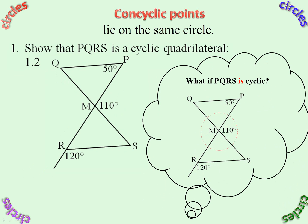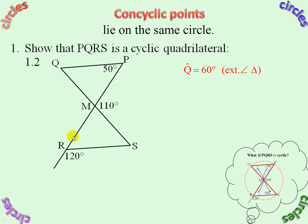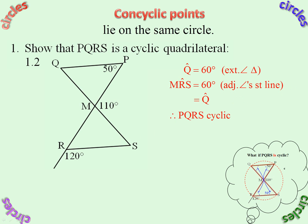Now prove PQRS is a cyclic quadrilateral. Here's my thought process — there is my circle. If PQRS is a cyclic quadrilateral, that would equal that, or that would equal that. Q is 60 degrees — exterior angle of a triangle. MRS is 60 degrees — adjacent angle on a straight line — which equals Q. We've now proven that that angle equals that angle. Therefore PQRS is cyclic. Reason: Converse Angles in the Same Segment.